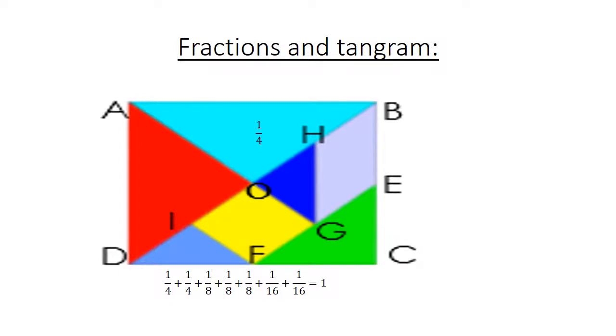The first one is the turquoise one, 1 over 4. Then we have our red triangle, 1 over 4. Our parallelogram, 1 over 8. Green triangle, 1 over 8.